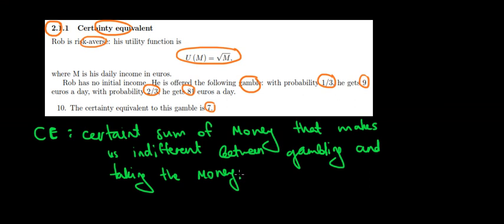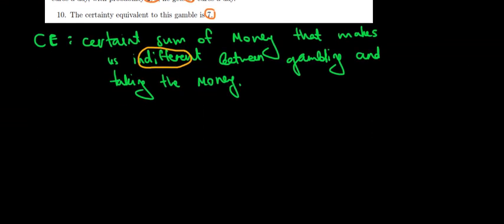Now, when are we indifferent? This is the key word here. We are indifferent when we have the same expected happiness, the same expected utility. So that means we would like to have an expected utility from the gamble equal to the expected utility from our certainty equivalent.